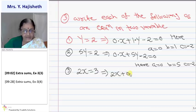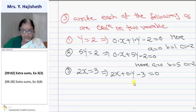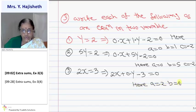Third sum is two x equals three. I write it as two x plus zero times y minus three equals zero — the term containing y is missing, so we add zero y. Here a is two, b is zero and c is minus three.